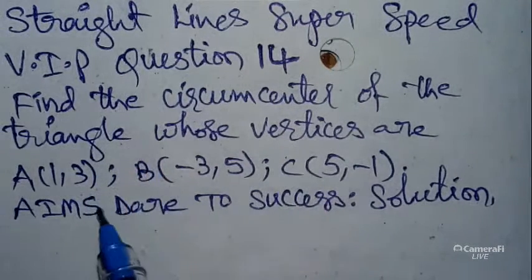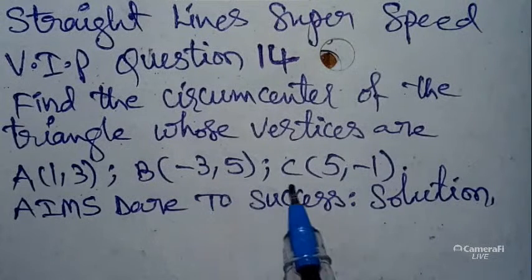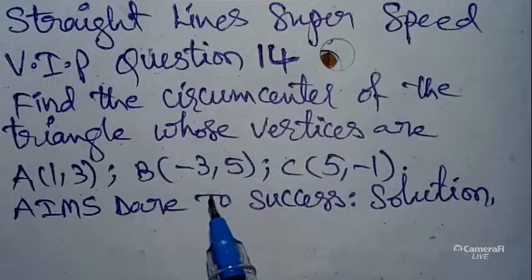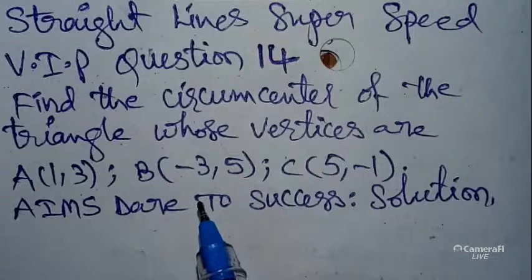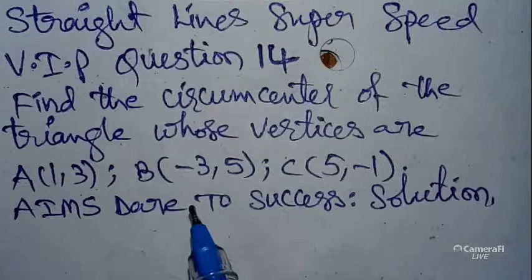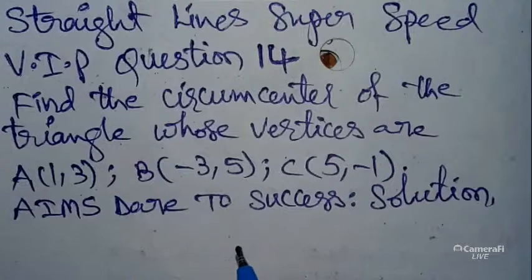Today our question is: find the circumcenter of the triangle whose vertices are (1, 3), (-3, 5), and (5, -1). Some students are having a little bit of difficulty solving this question. Today I wanted to explain this question with a neat, step-by-step explanation with my magic explanation. Please listen carefully — success will come to you automatically.